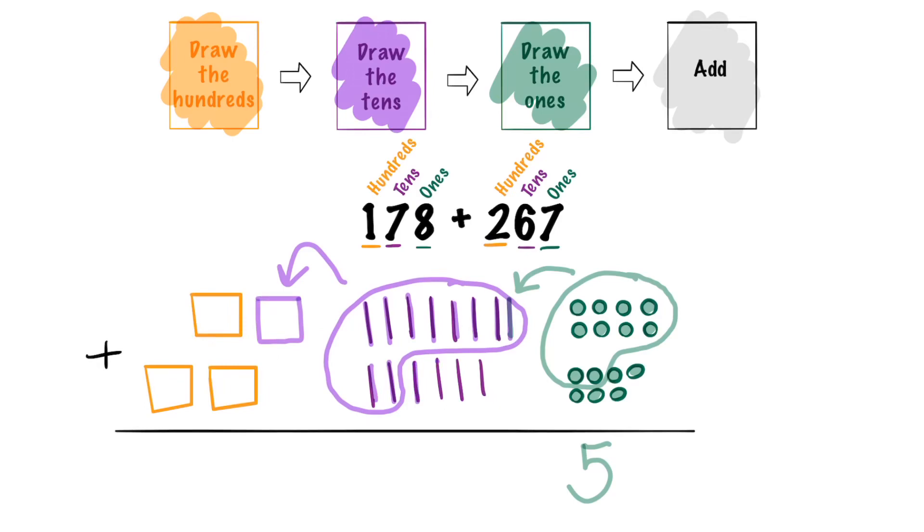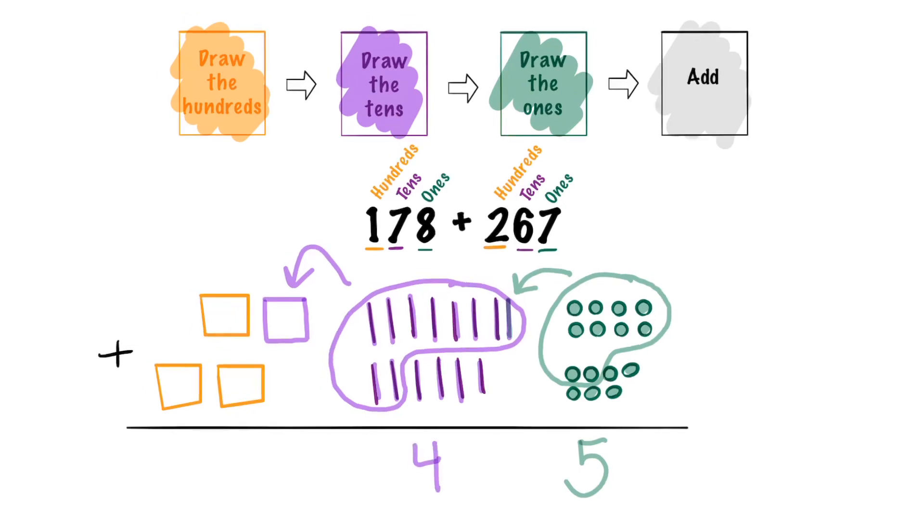Let's count our tens. 1, 2, 3, 4. We have 4 tens. And last let's count up our hundreds. 1, 2, 3, 4. We have 400. The sum is 445.